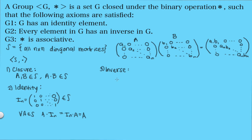Next we look at the second axiom: every element must have an inverse. Here we see an issue, because any diagonal matrix with a zero on the diagonal will not have an inverse. For example, such a matrix is still in S, but there is no element in S that can serve as its inverse, since no number multiplied by zero can give us one. So this is not a group.